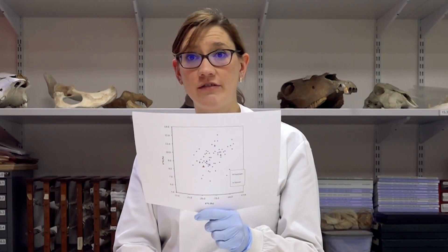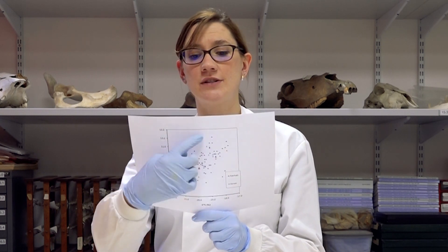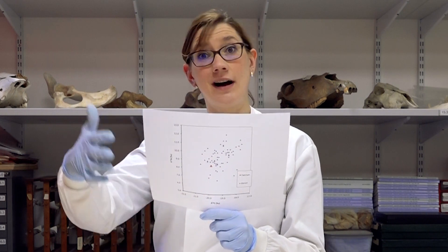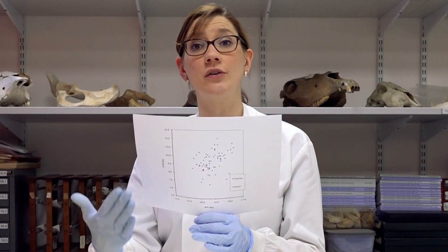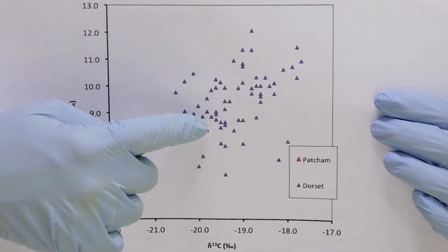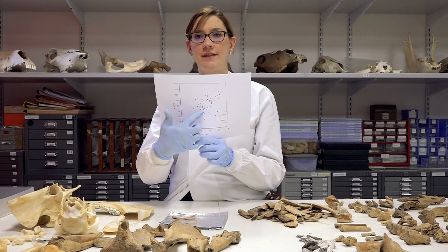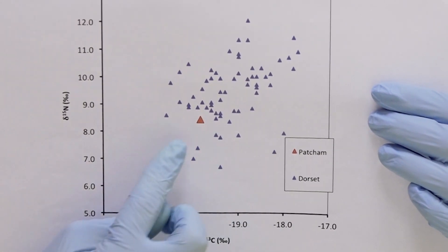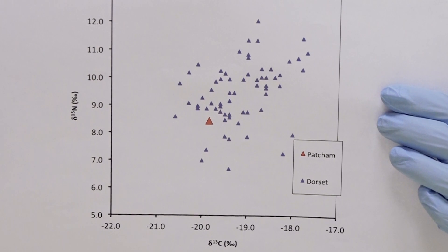One of the things we think is going on in the Roman period is that higher nitrogen values are associated with people of higher status — higher class. People with low nitrogen values are those who can't afford a lot of animal protein. When we look at this Brighton individual, we can see they plot not among the people with the least protein in their diet — relatively lower status, but still with animal protein in their diet.